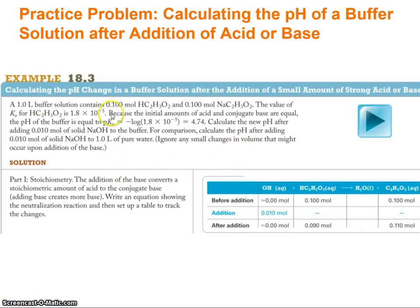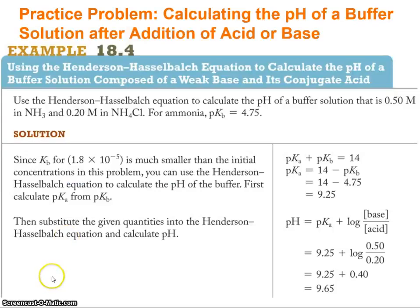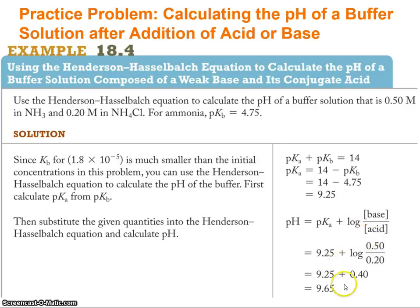Here's a quick example from the book: a 1 liter buffer with 0.1 moles of acetic acid and acetate, but now adding 0.01 moles of sodium hydroxide. Set up the stoichiometry step — consume some acetic acid, produce more acetate — then calculate pH using Henderson-Hasselbalch. There's also an example using a weak base and its conjugate acid: ammonia with pKb of 4.75. Convert pKb to pKa, then use Henderson-Hasselbalch, ending up with a pH of 9.65.